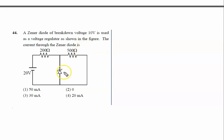A generator diode of breakdown voltage 10 volt is used as a voltage regulator as shown in the figure. The current through the generator diode, we have to calculate the current through the generator, that is iz. First of all, we will check if the generator is working or not.